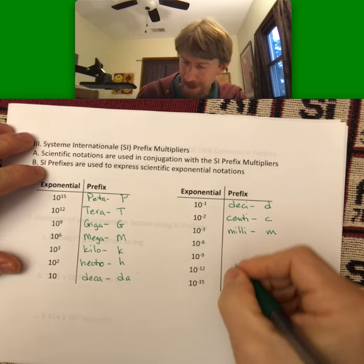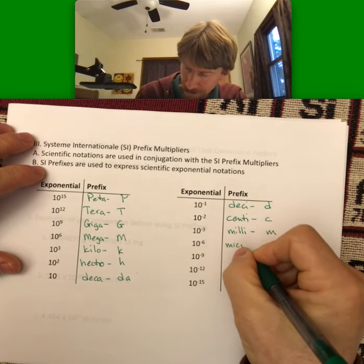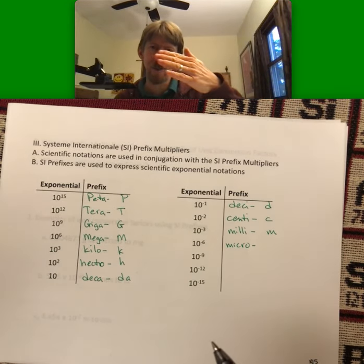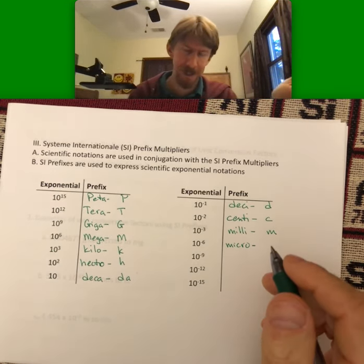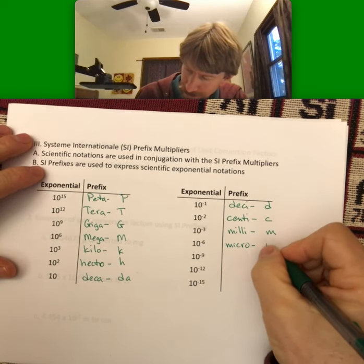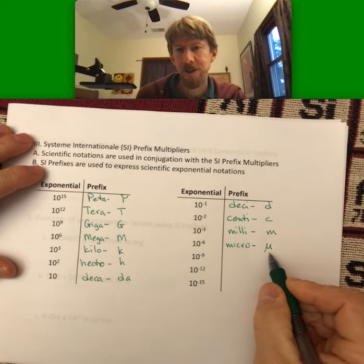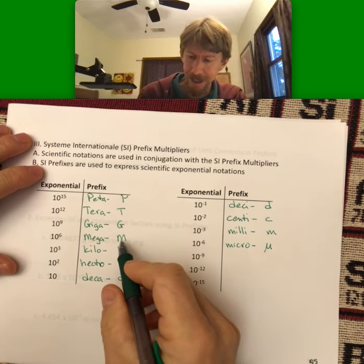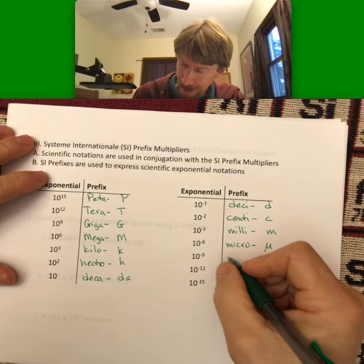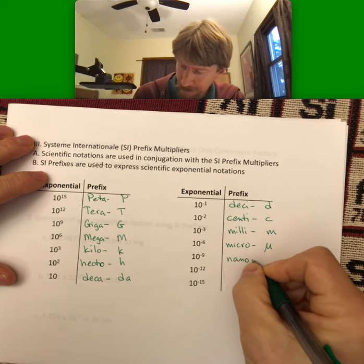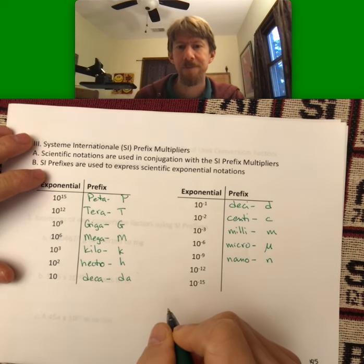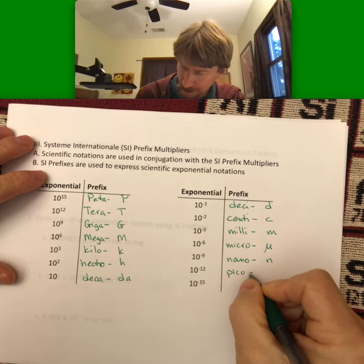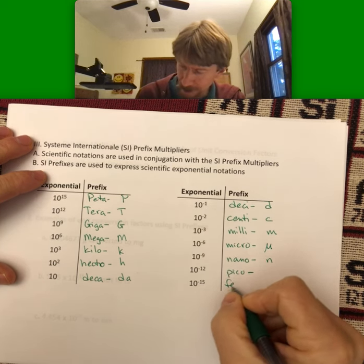10 to the minus 6 is micro. These dashes mean that they're attached to another word, that's what we mean by prefixes. Micro has the Greek lowercase letter mu because we already have a lowercase and an uppercase m. Then nano with lowercase n, pico, and femto.